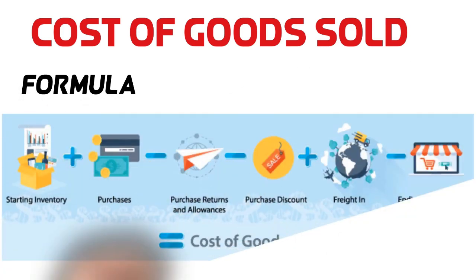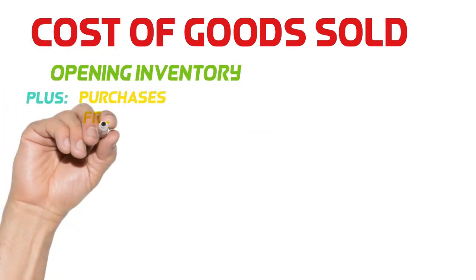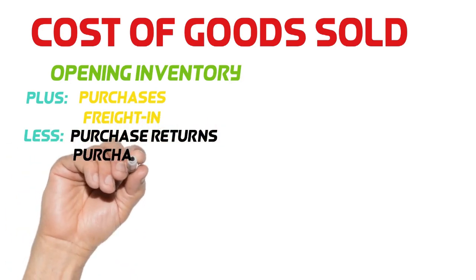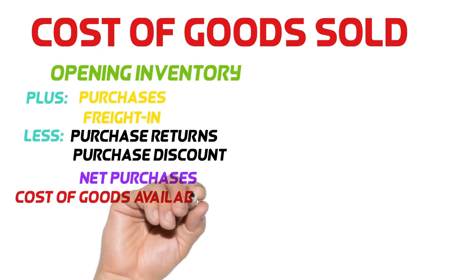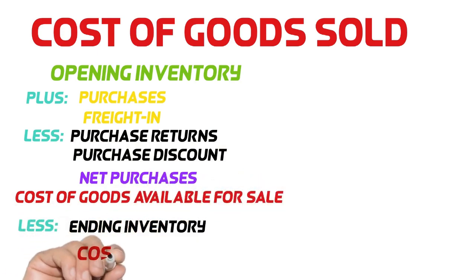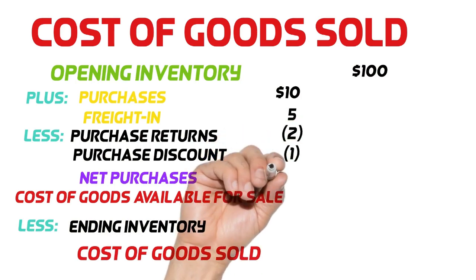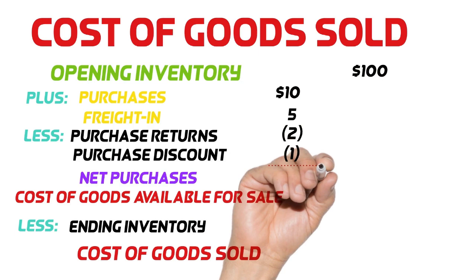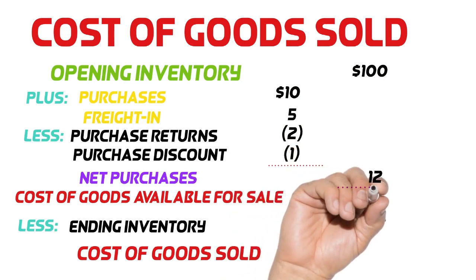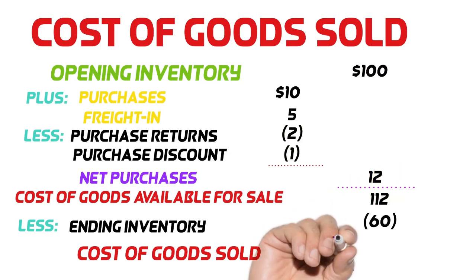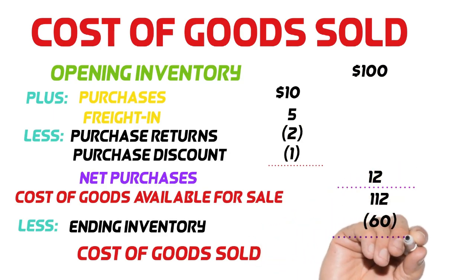Another formula we use to calculate cost of goods sold: cost of goods sold is equal to opening inventory, plus purchases, less purchases returns, less purchases discount, plus freight in, less ending inventory. Let me explain this formula in statement form, because accountants always love statements. In the statement form, we start with opening inventory, plus purchases and freight in costs, and less purchases returns and purchases discounts. When we add net purchases with opening inventory, the balance amount is called the cost of goods available for sale. Then we subtract ending inventory from the total to get the cost of goods sold amount.